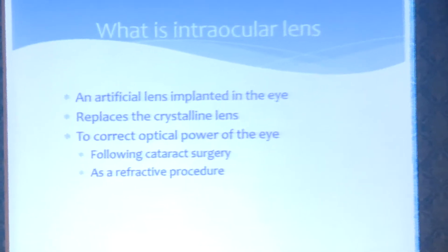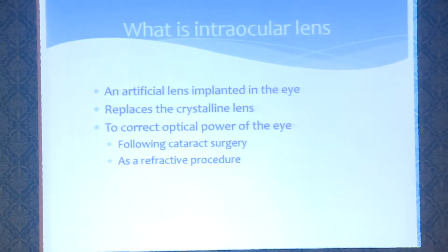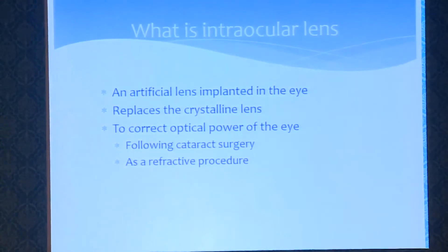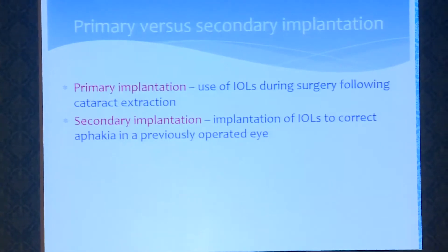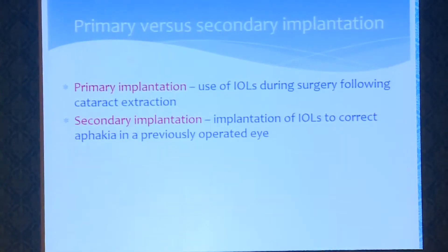An intraocular lens is an artificial lens implanted in the eye which replaces the crystalline lens to correct the optical power of the eye following cataract surgery or as a refractive procedure.